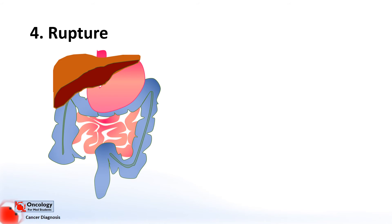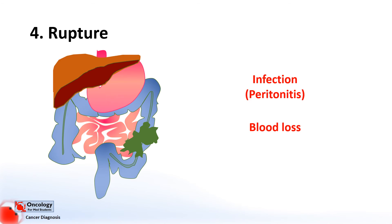The next example is rupture. As tumours grow bigger and bigger they can become more and more unstable and they can burst and rupture through to other parts of the body. An example of this might be a bowel tumour rupturing through to the peritoneal cavity, which can cause a severe type of infection called peritonitis. Other problems might include rupturing large blood vessels, leading to a lot of blood loss.